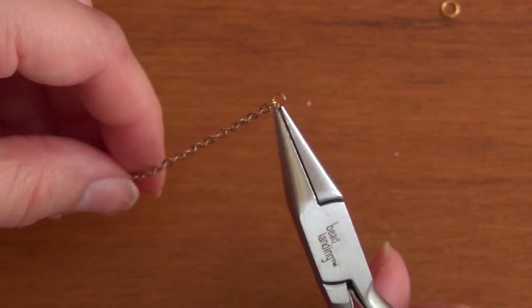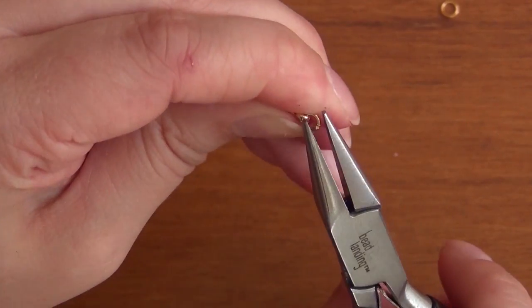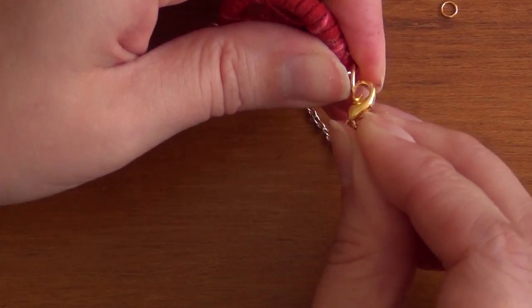At this point, make sure your chain fits around your wrist to the right size. Then use another jump ring to attach your lobster clasp, or whichever type of clasp you want to use.